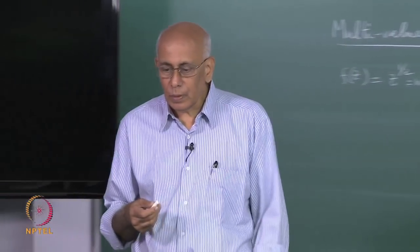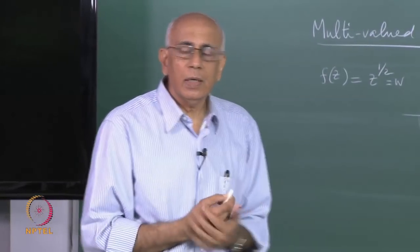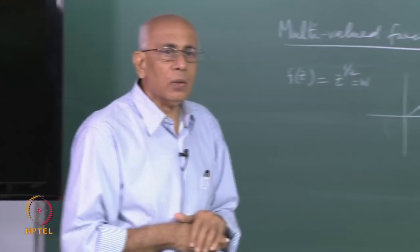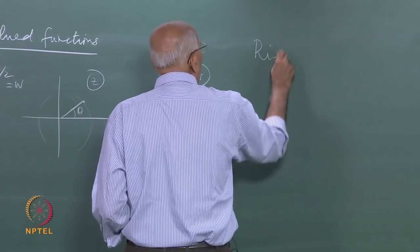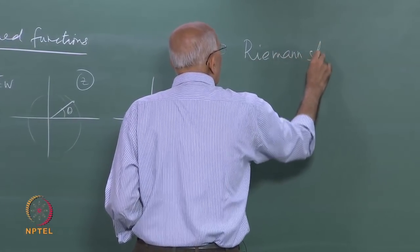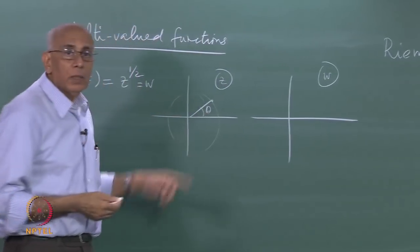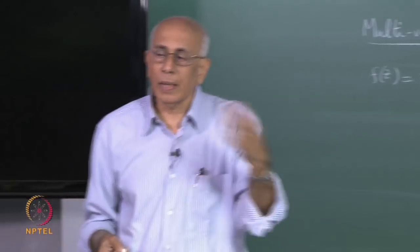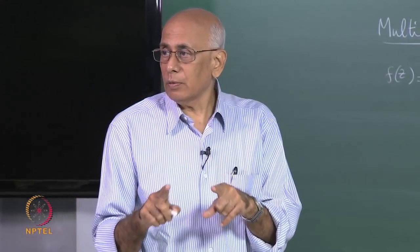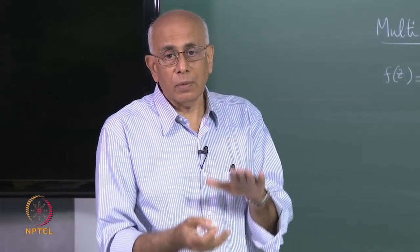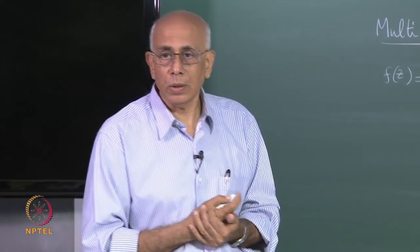These two copies are called Riemann sheets. In the case of the square root function, you need just two of these sheets, because that covers the entire w plane. It is clear that if you had z to the power one-third as a function, you would need three copies of the z plane to cover the w plane completely — three Riemann sheets. And so on and so forth.